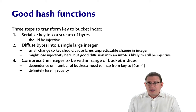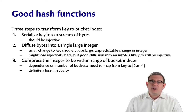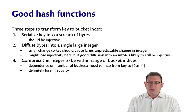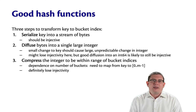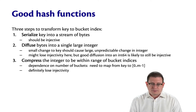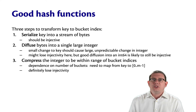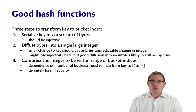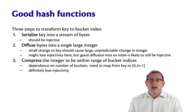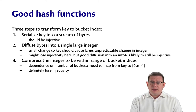If there are m different buckets in the table, then we need to map the key into 0 through m minus 1. At this point, we definitely lose injectivity because we're going from a very large space down to a small space.